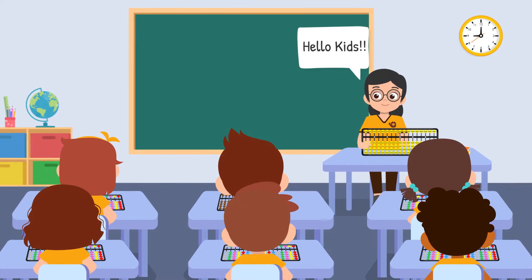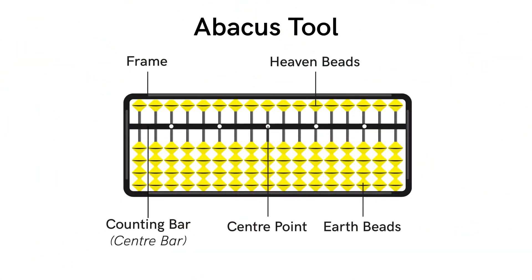Well hello kids, in our last session we learned about the different parts of the abacus tool and understood how to differentiate between the rods. We know what the frame of the abacus is, the heaven beads, and the earth beads.